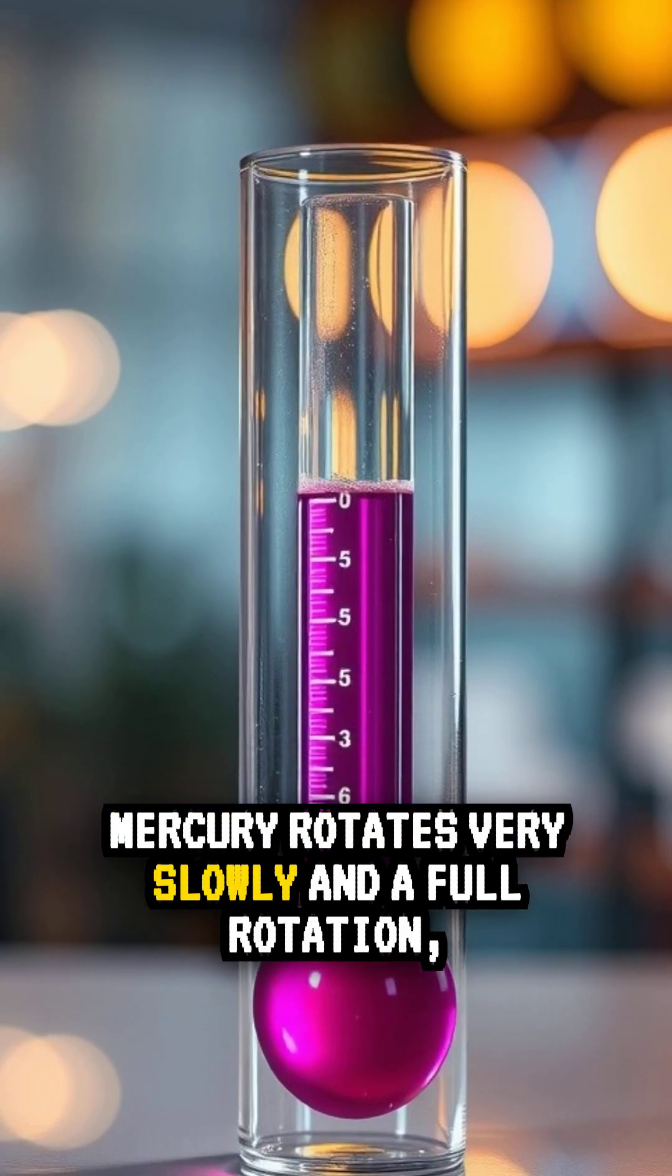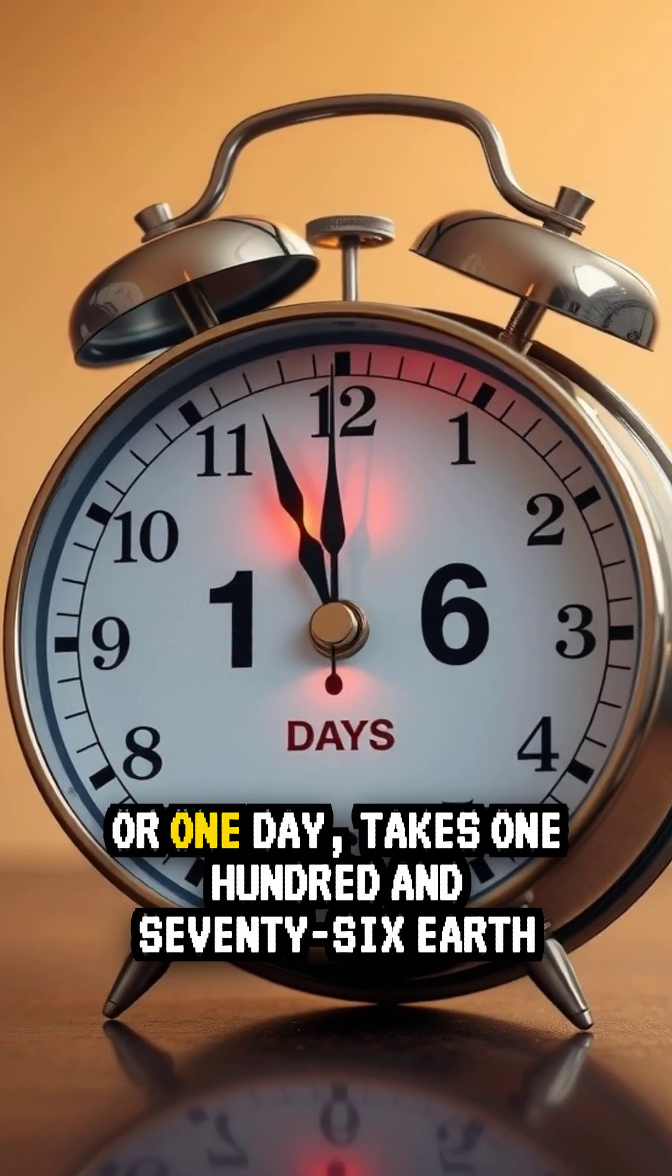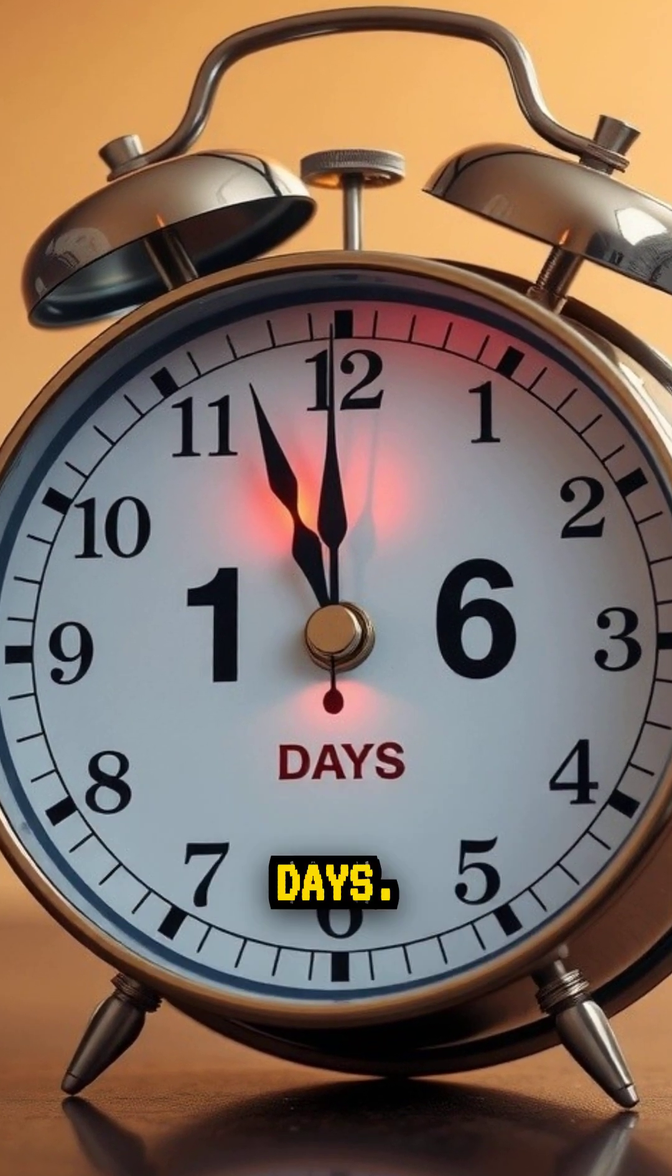Mercury rotates very slowly and a full rotation, or one day, takes 176 Earth days.